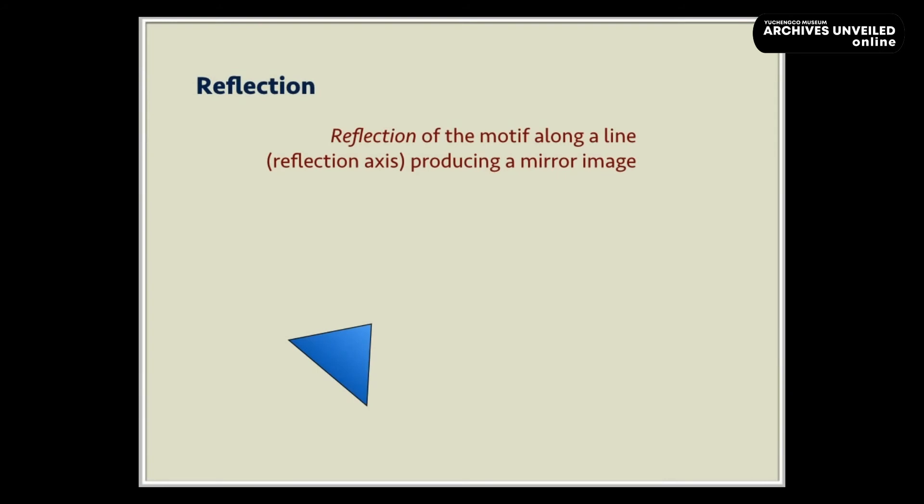A reflection, on the other hand, moves a motif along a line, called a reflection axis, producing a mirror image.